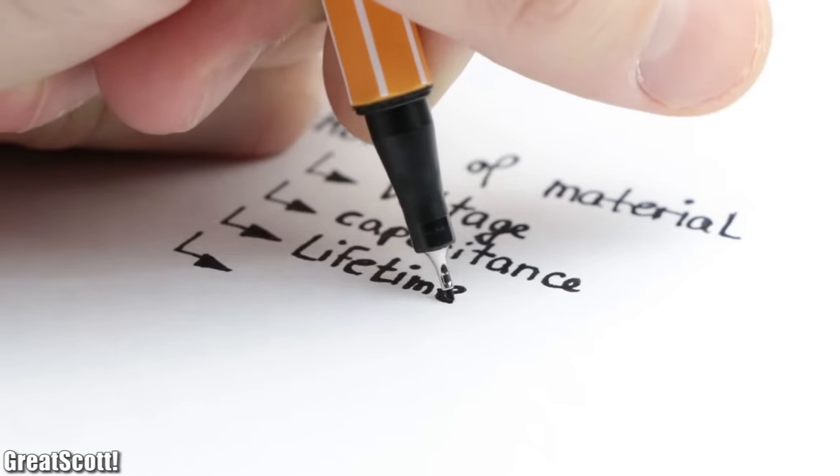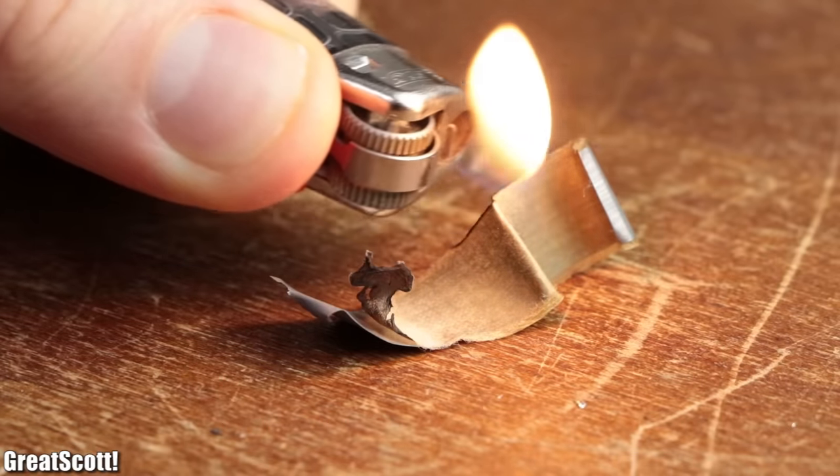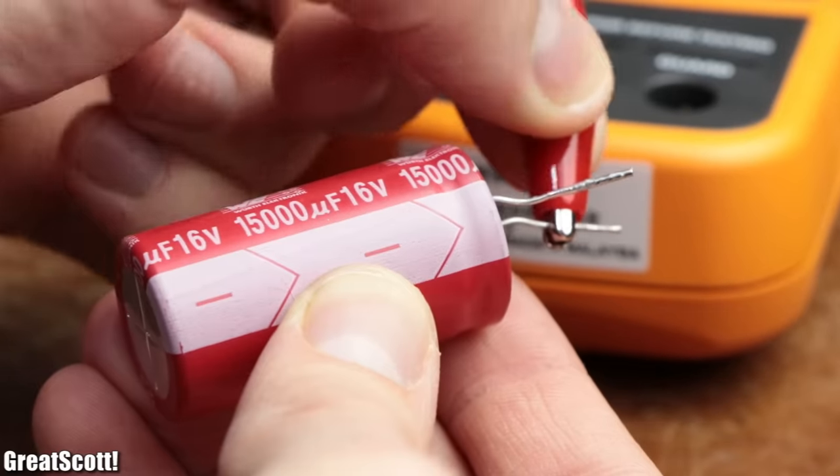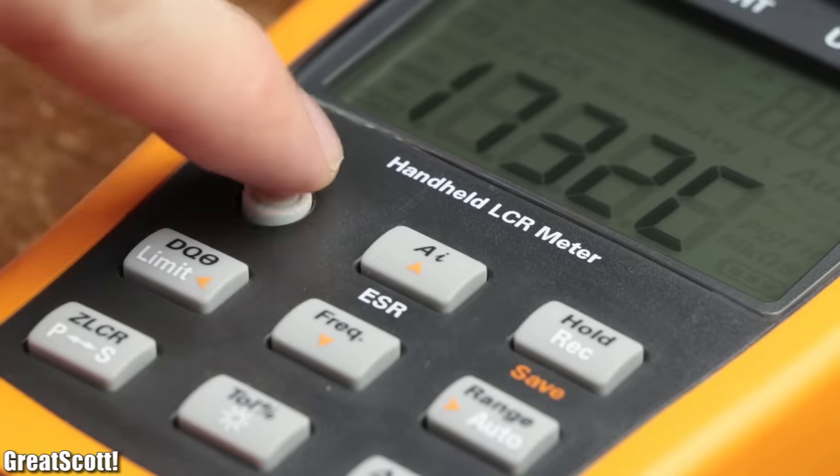Like for example, the expected lifetime or whether a capacitor is flammable. But there are more hidden properties, which we can discover by examining the capacitors with an LCR meter.